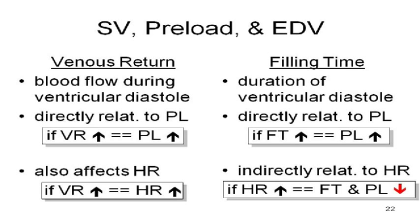The reason the right atrium is important is because that's where the SA node is. Stretching that right atrium is going to stimulate the SA node. So if venous return increases, heart rate increases — because as blood goes into the right atrium, it stretches the wall, which is where the SA node is right at the top.